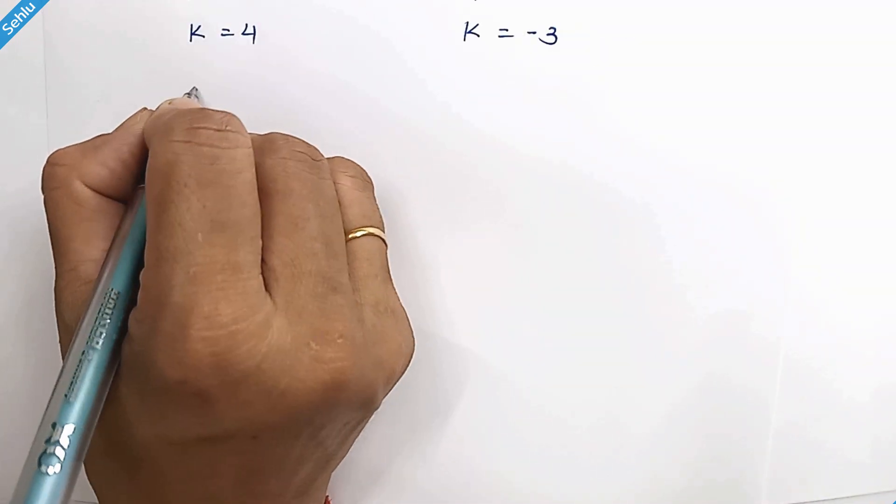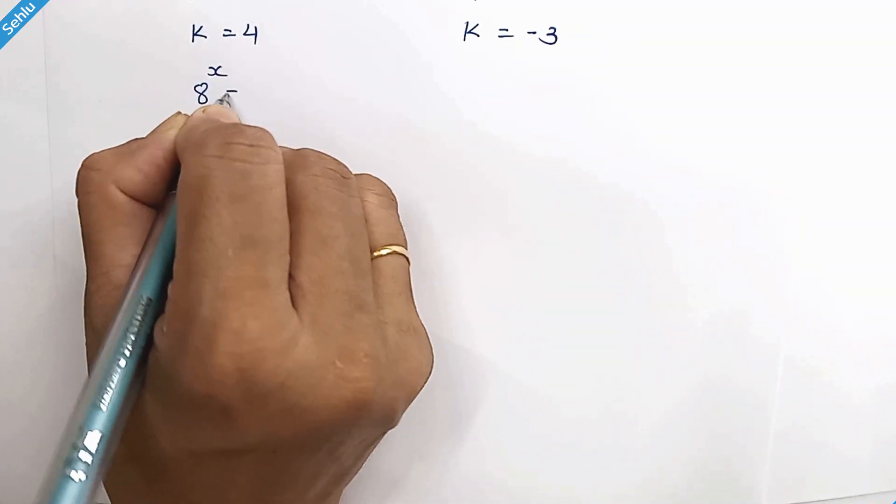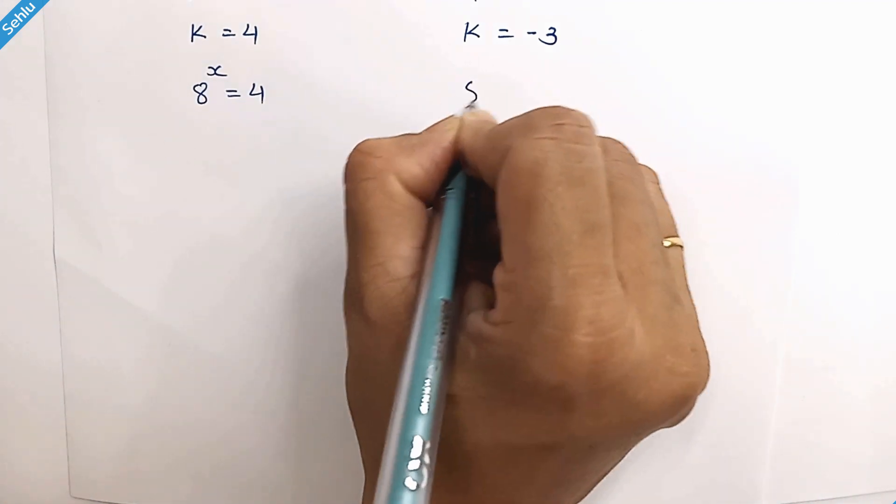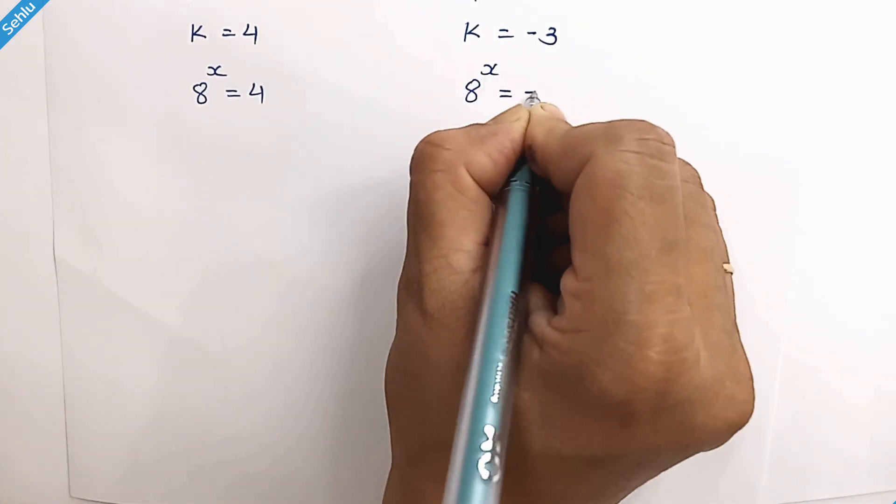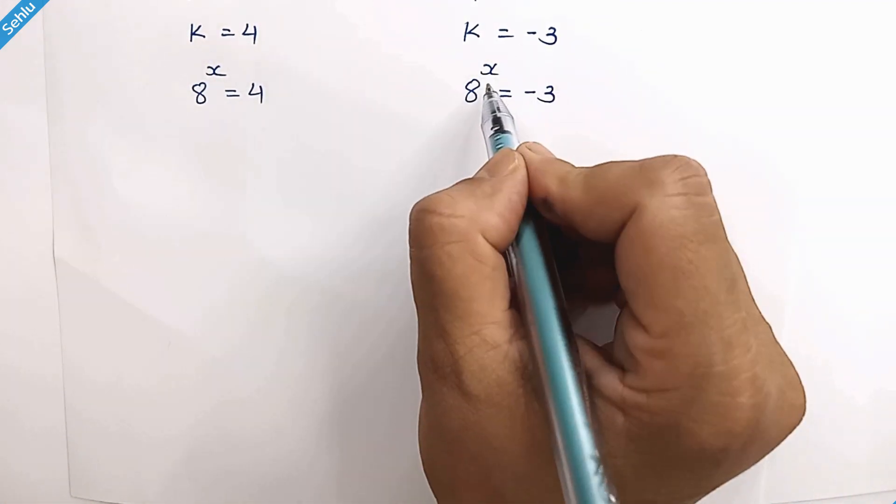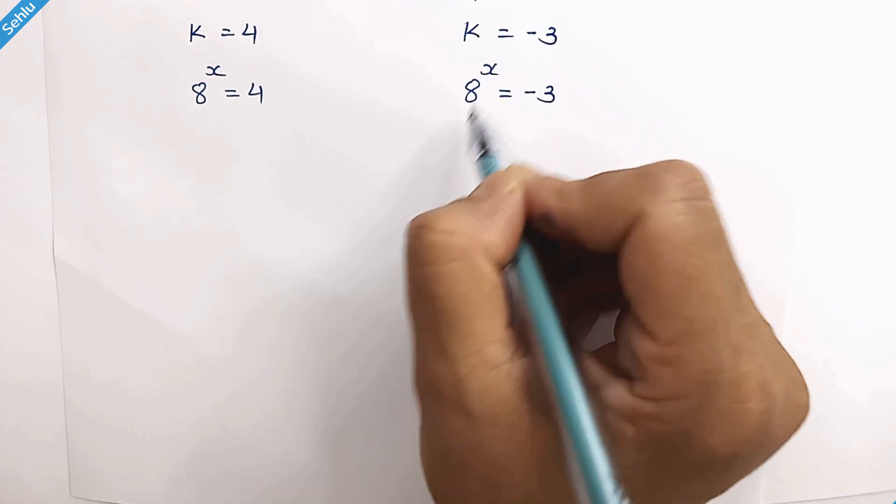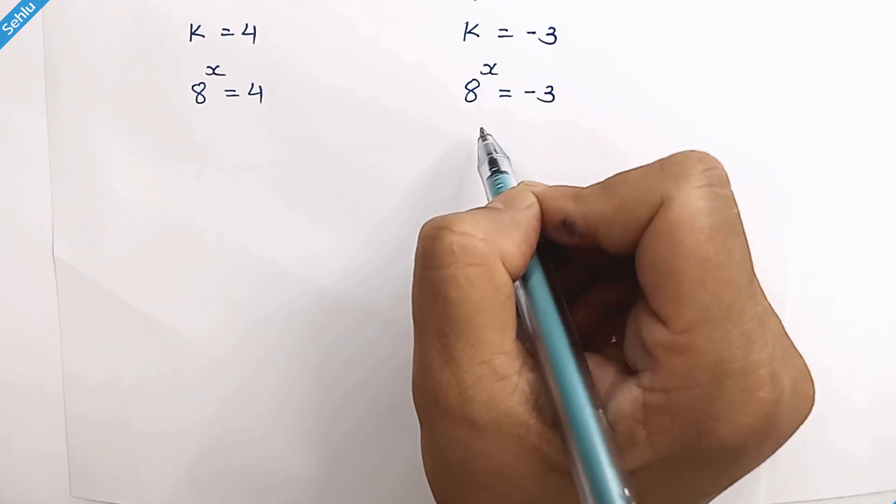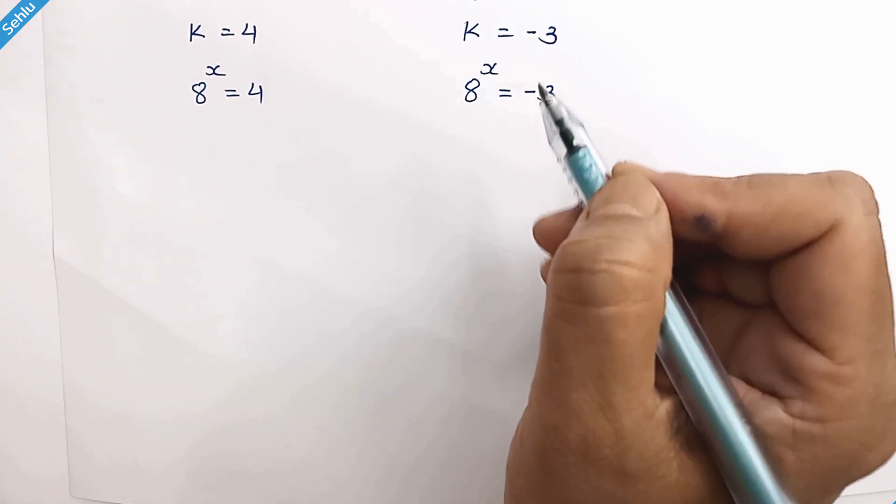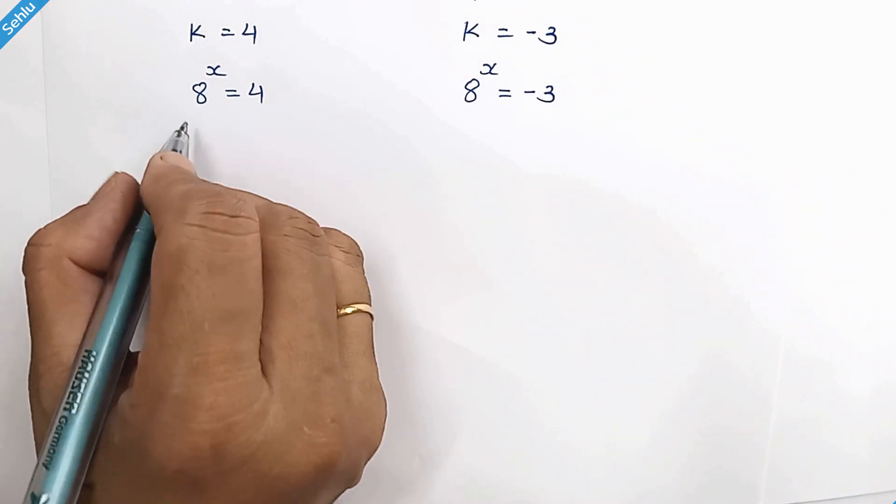K was taken for 8 to the power x. Here x is real number, so 8 to the power x cannot be negative, so we discontinue this path.